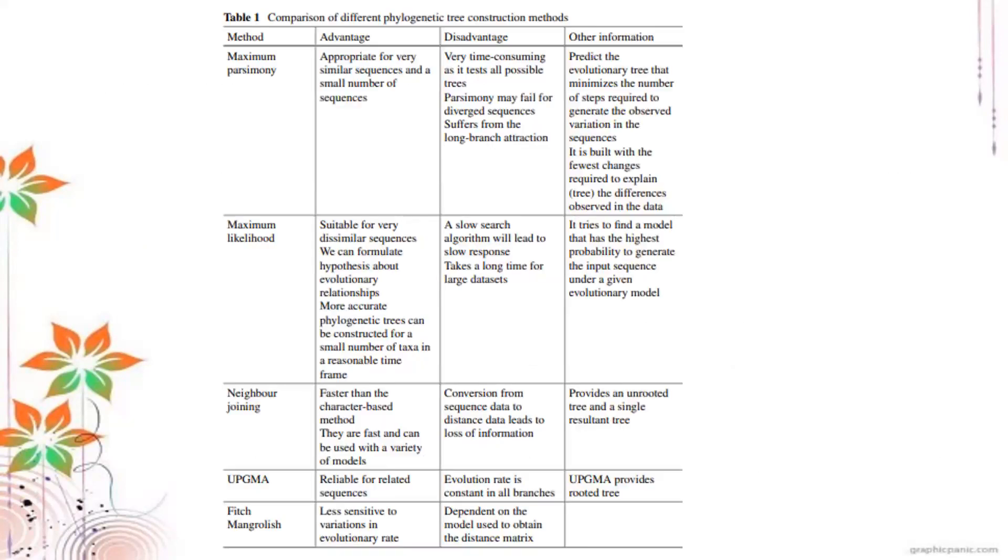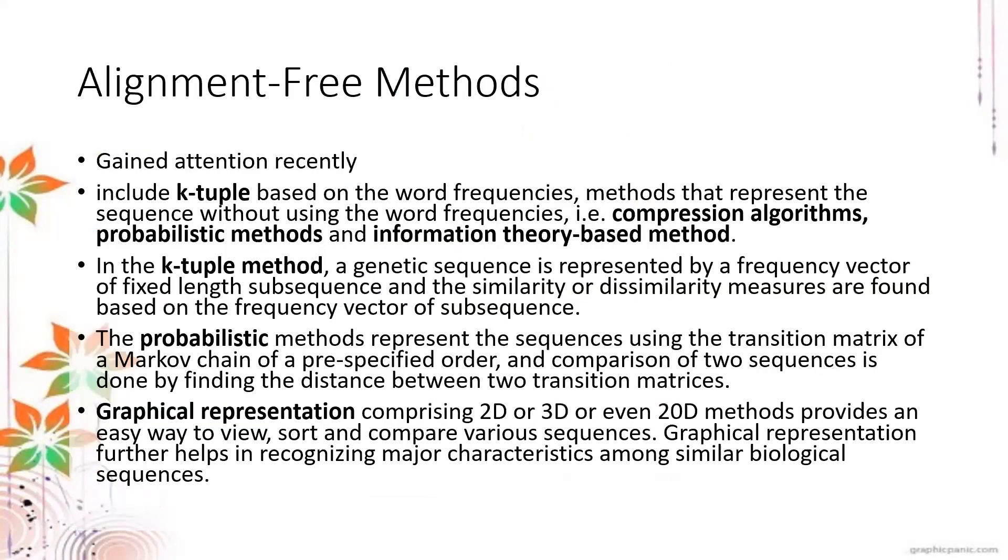These are a summary of some alignment-based methods. Maximum parsimony and maximum likelihood are character-based methods. Neighbor joining and UPGMA are distance-based methods.